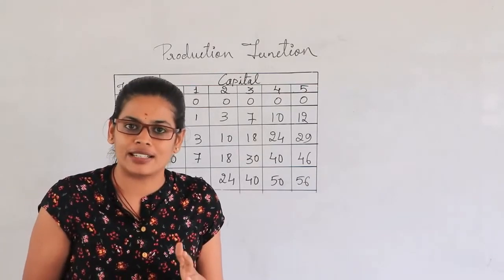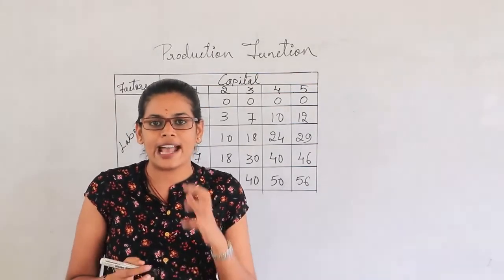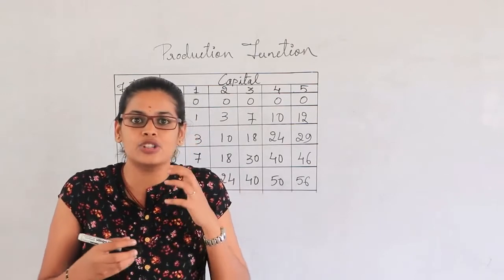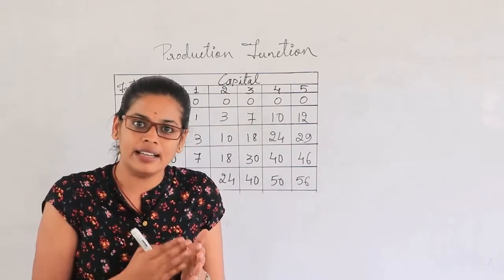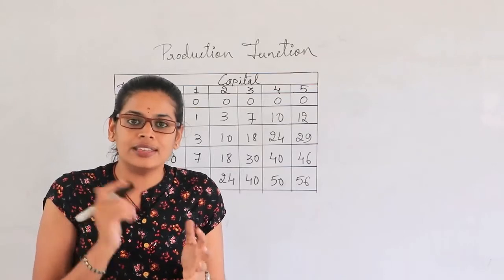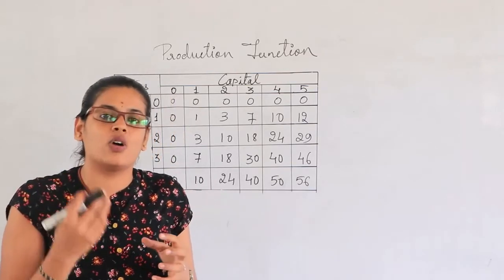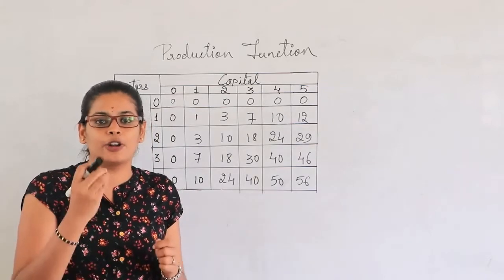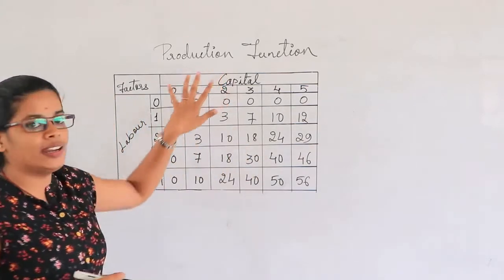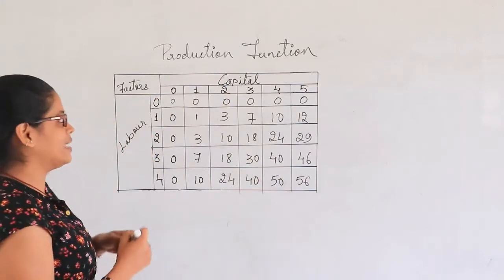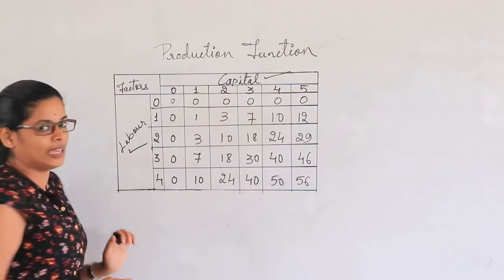So what are these two factors? When a producer is producing a commodity, he should have land and labor, or land and capital. So land, labor, capital, raw materials, and machineries are all factors which a producer should have. For a basic understanding, we are considering only two factors: capital and labor.